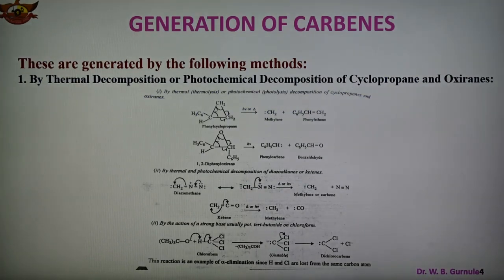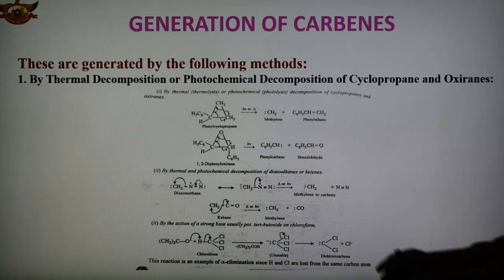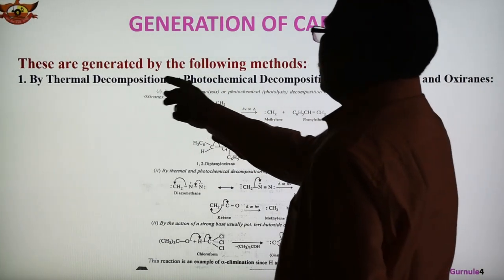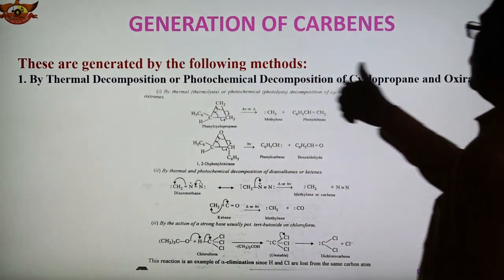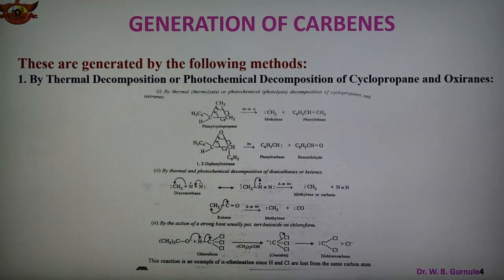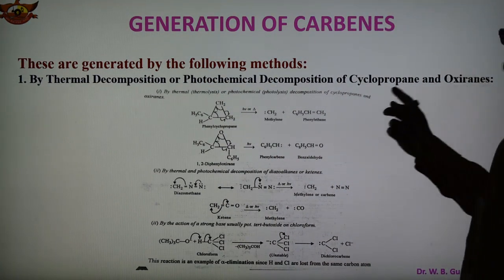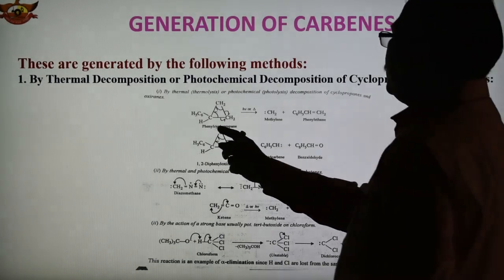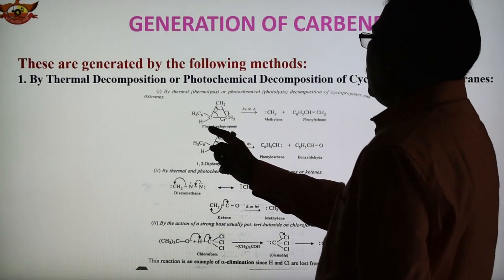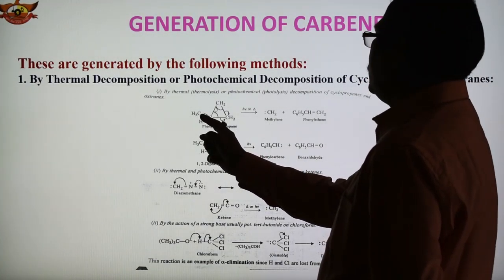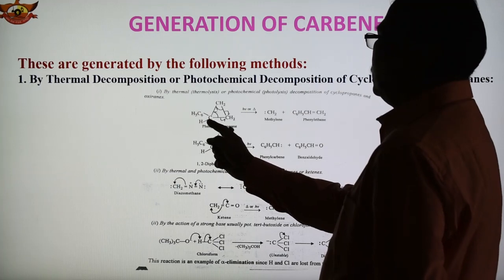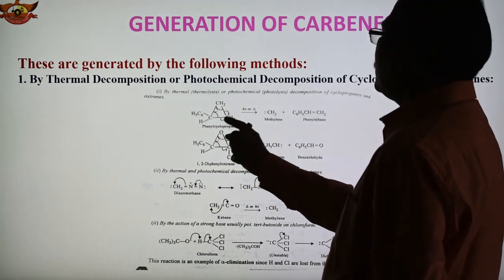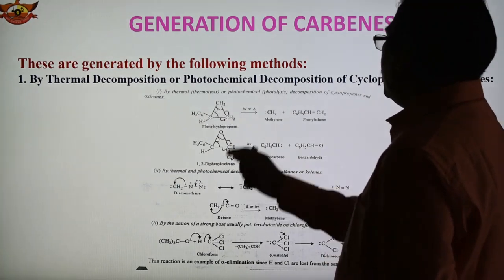The next part is the generation of carbene — how carbenes are generated. There are 3 different methods for the formation of carbene. The first method is by thermal or photochemical decomposition of cyclopropane or oxirene. Two examples are given: phenyl cyclopropane, where C6H5 is the phenyl group attached to cyclopropane.